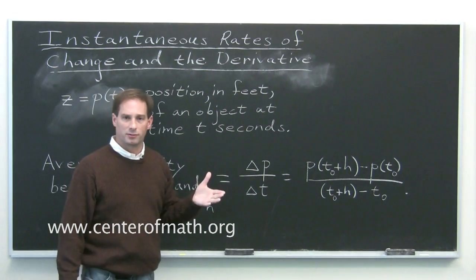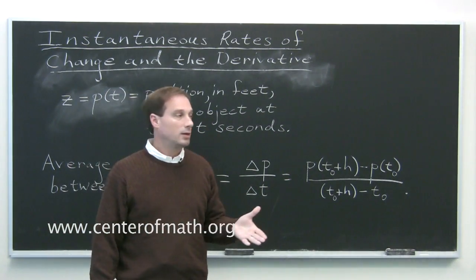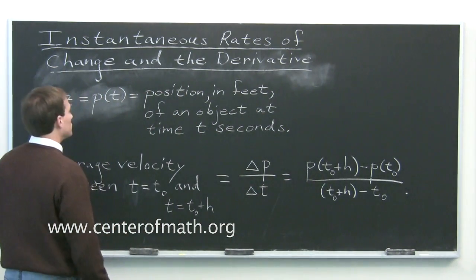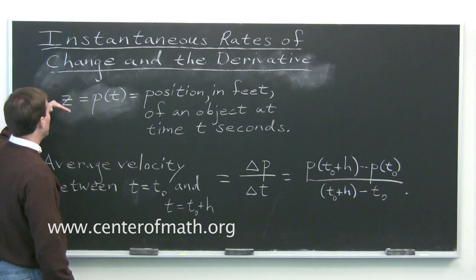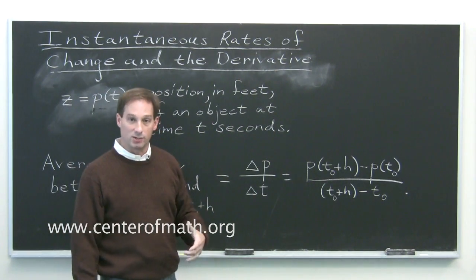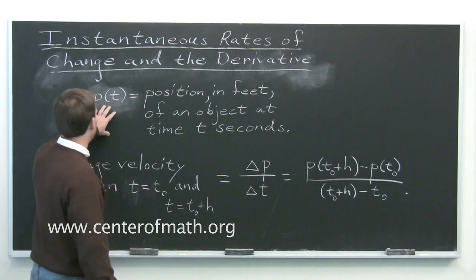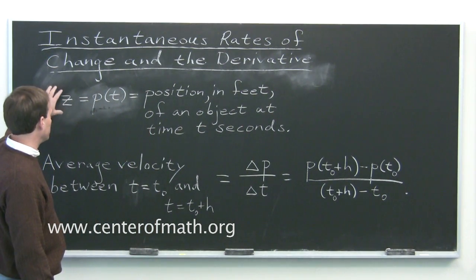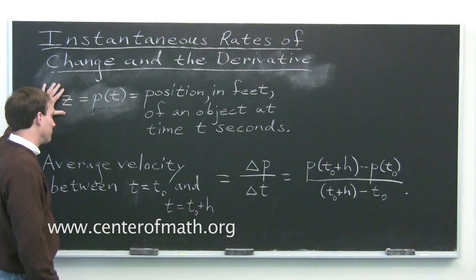Instantaneous rates of change and the derivative. This is the fundamental topic in differential calculus. Suppose you've got a function of time that's the position of some object at time t seconds. I've called it p(t), and I've named that variable z, which you get out of the position function.